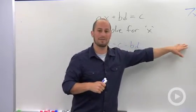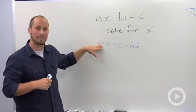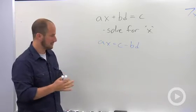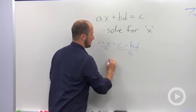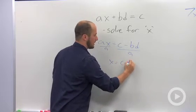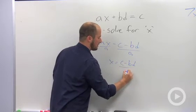Just like we did where we divided by 7, we want to divide by the number in front of x, which is a in this case. So divide by a on both sides, and x equals c minus bd over a.